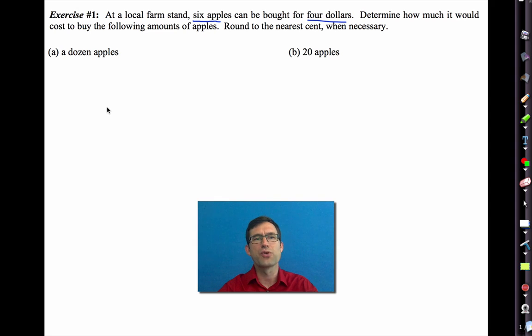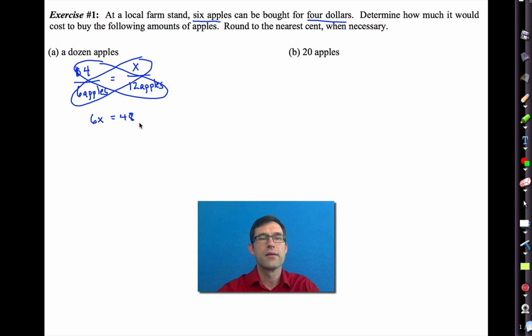So I want to know how much it's going to cost for a dozen apples. That's probably not going to be too tough. If six apples cost $4, then a dozen apples is going to cost $8. But let's set this up as a proportion. We're looking for the amount of money, and what we know is that we'll spend $4 for six apples. We can set up what's known as a proportion. $4 is to six apples as x dollars is to 12 apples.